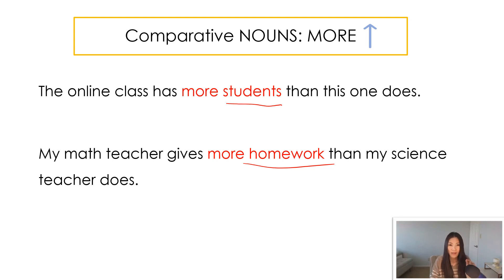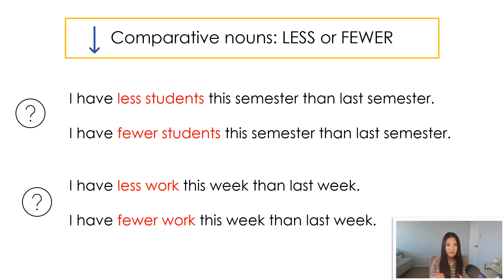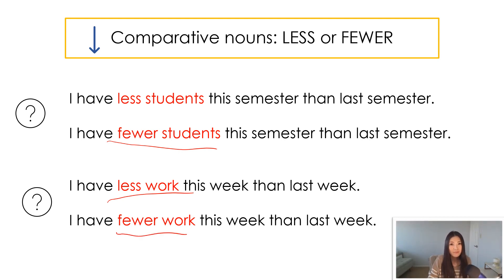But it becomes a little bit more tricky when we are talking about amounts that are less. When the amount decreases, you have to choose between 'less' or 'fewer.' Should I say 'I have less students this semester than last semester' — because this semester I have 20 students and last semester I had 25 — or should I say 'I have fewer students this semester than last semester'? Look at the next pair: should I say 'I have less work this week than last week,' or 'I have fewer work this week than last week'?